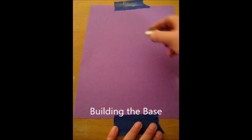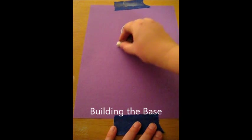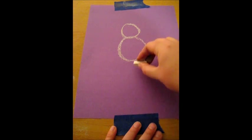So to build this base, we want to build the base of a snowman with a small circle, a medium circle, and a large circle.